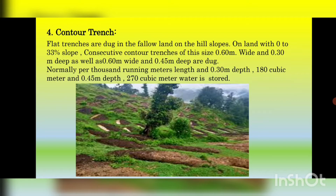Grass or tree roots in the trenches slow down the flow of water and it is absorbed into the soil. Due to the protected irrigation, wasteland becomes productive and this area is brought under cultivation to some extent.